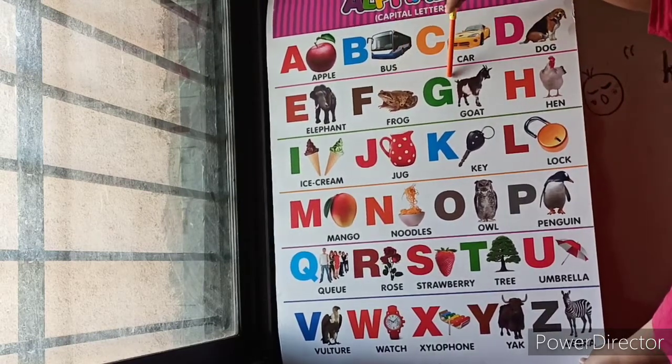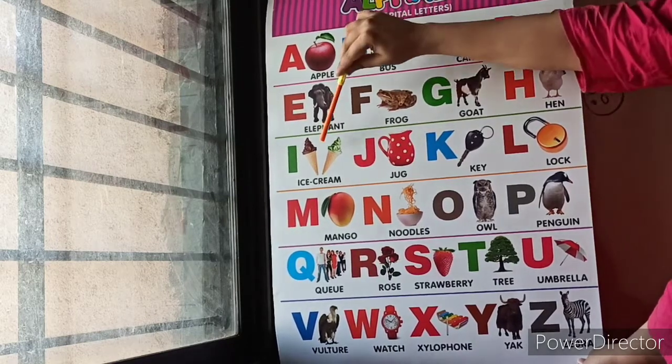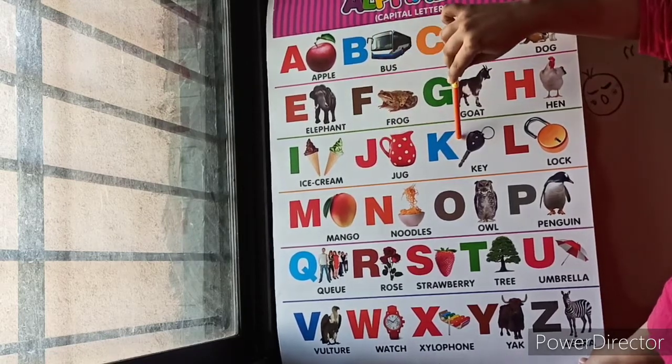G for Goat, H for Hen, I for Ice Cream, J for Jug, K for Key.